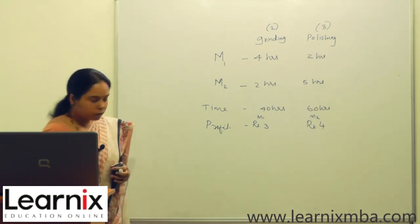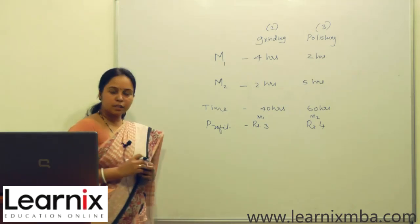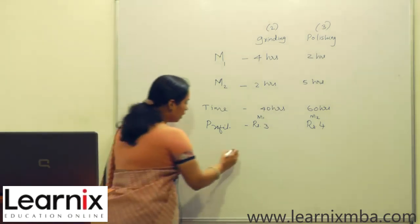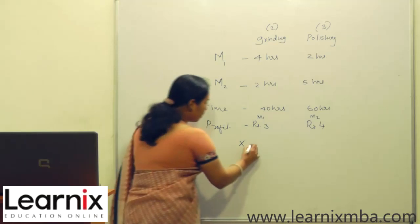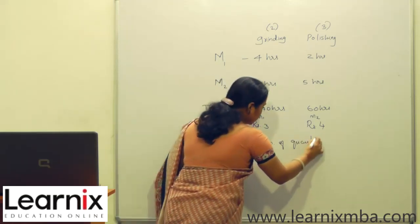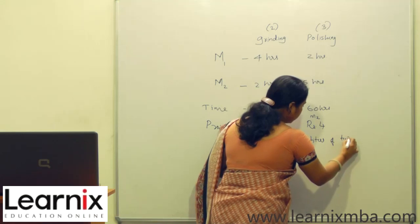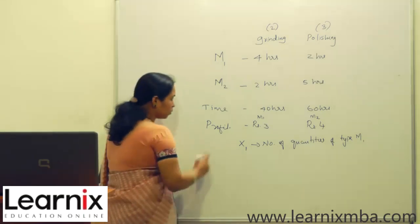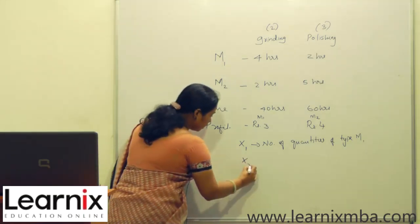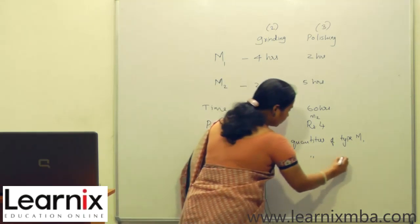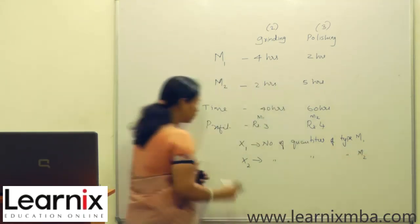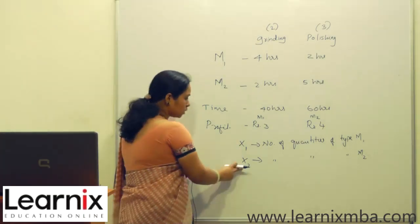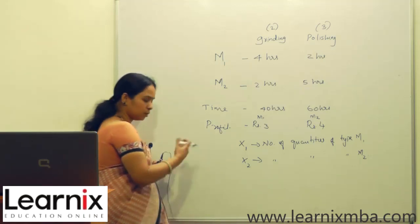We are required to find the number of quantities of models M1 and M2 to produce. Let X1 denote the number of units of type M1, and let X2 denote the number of units of model M2 that are to be produced.